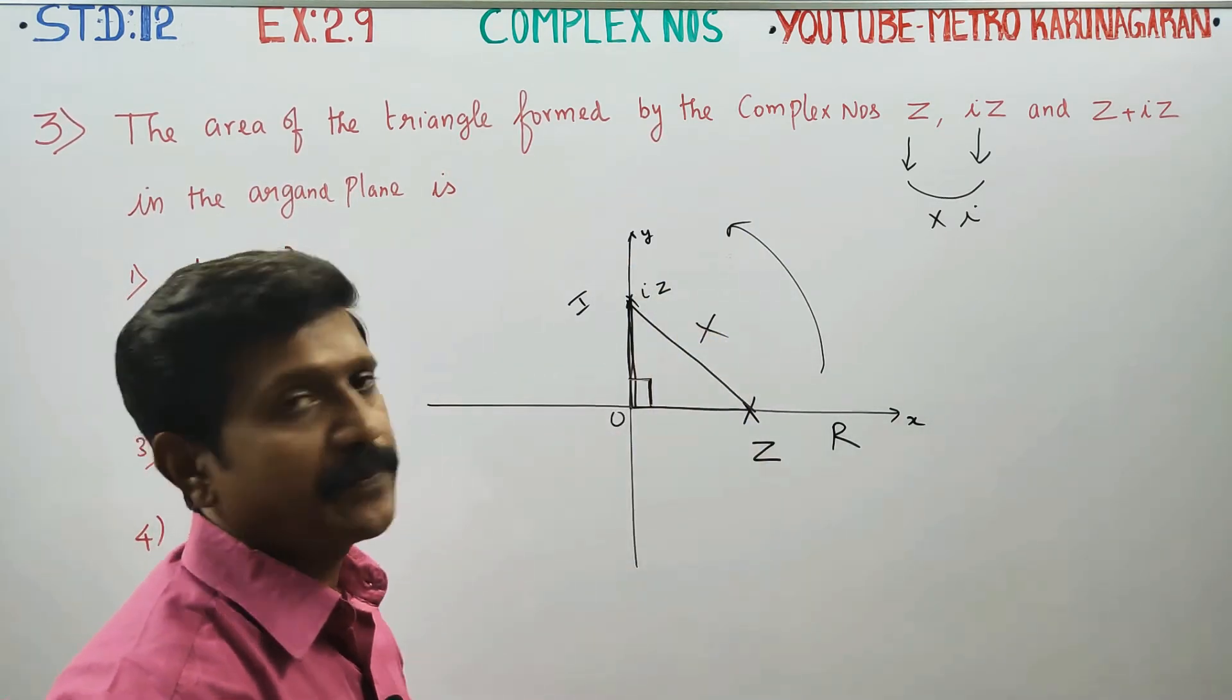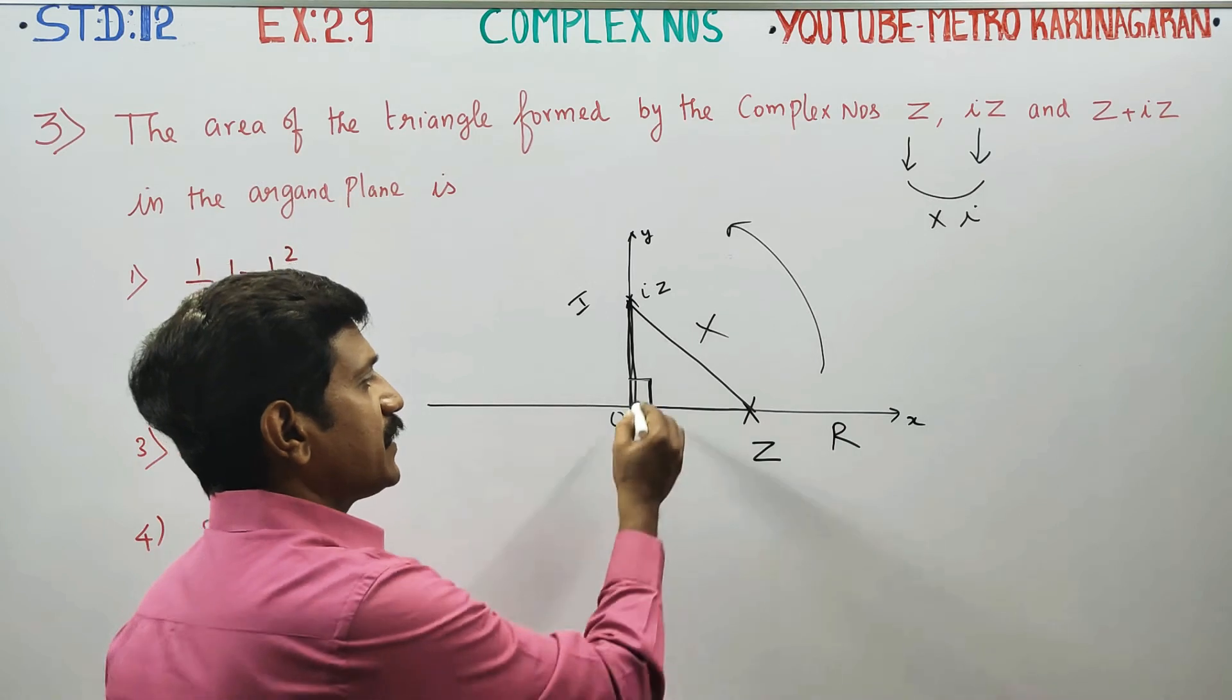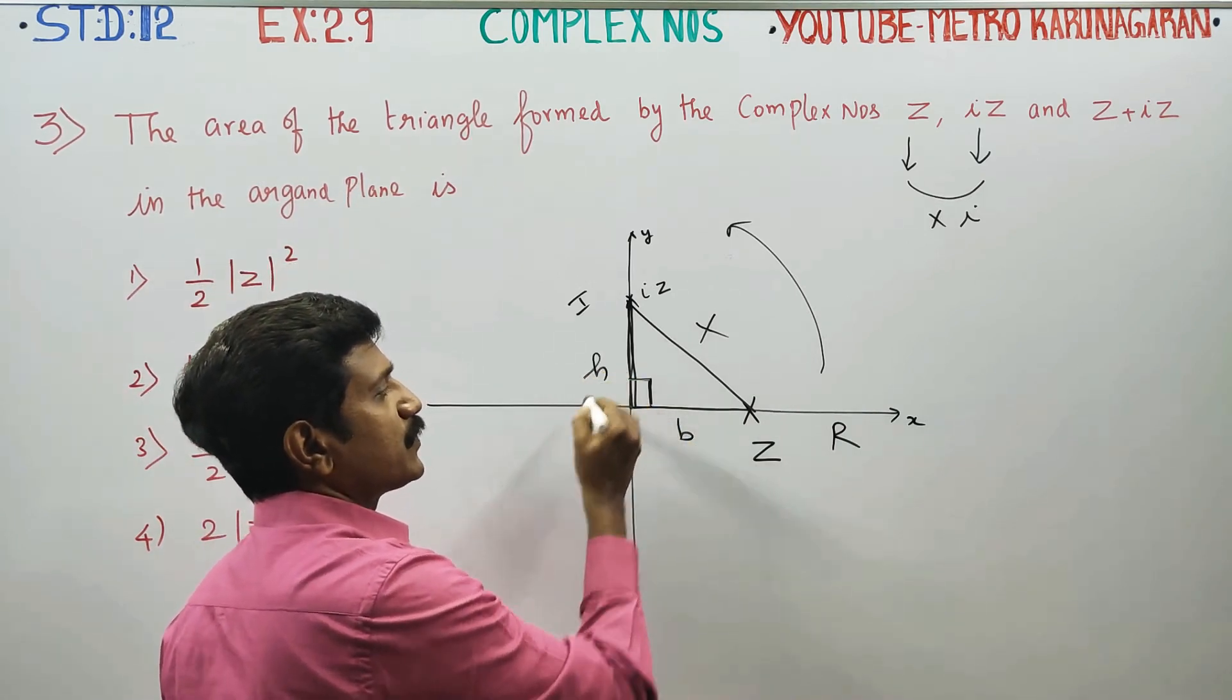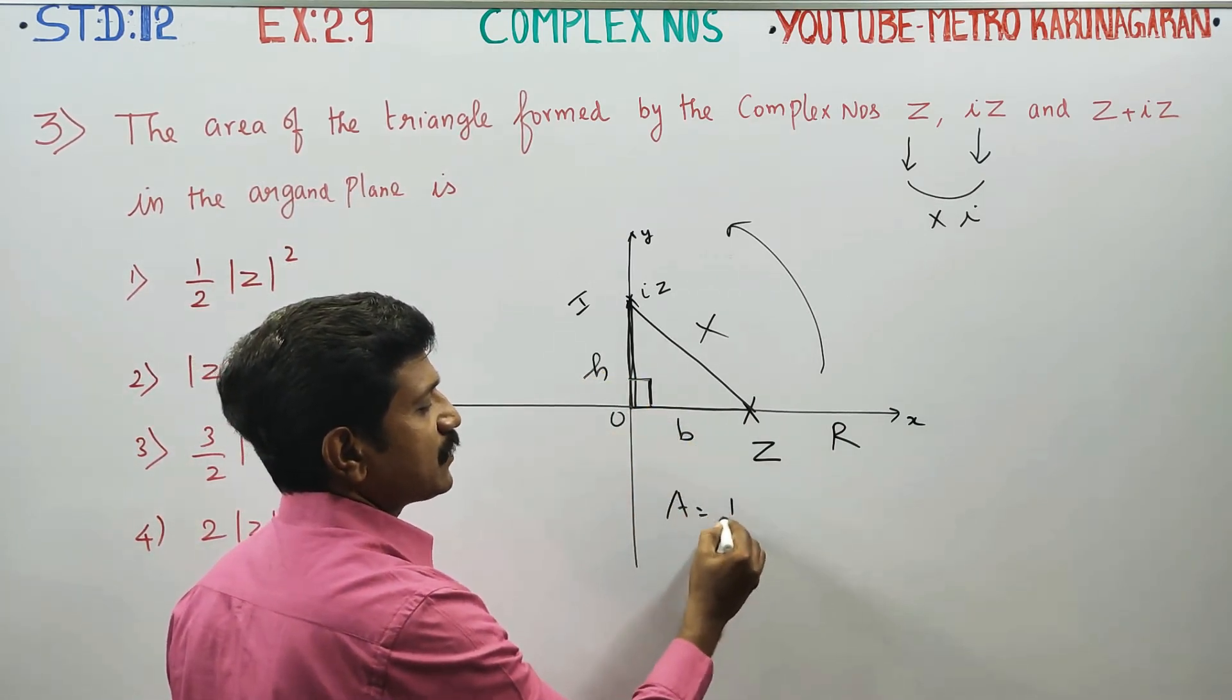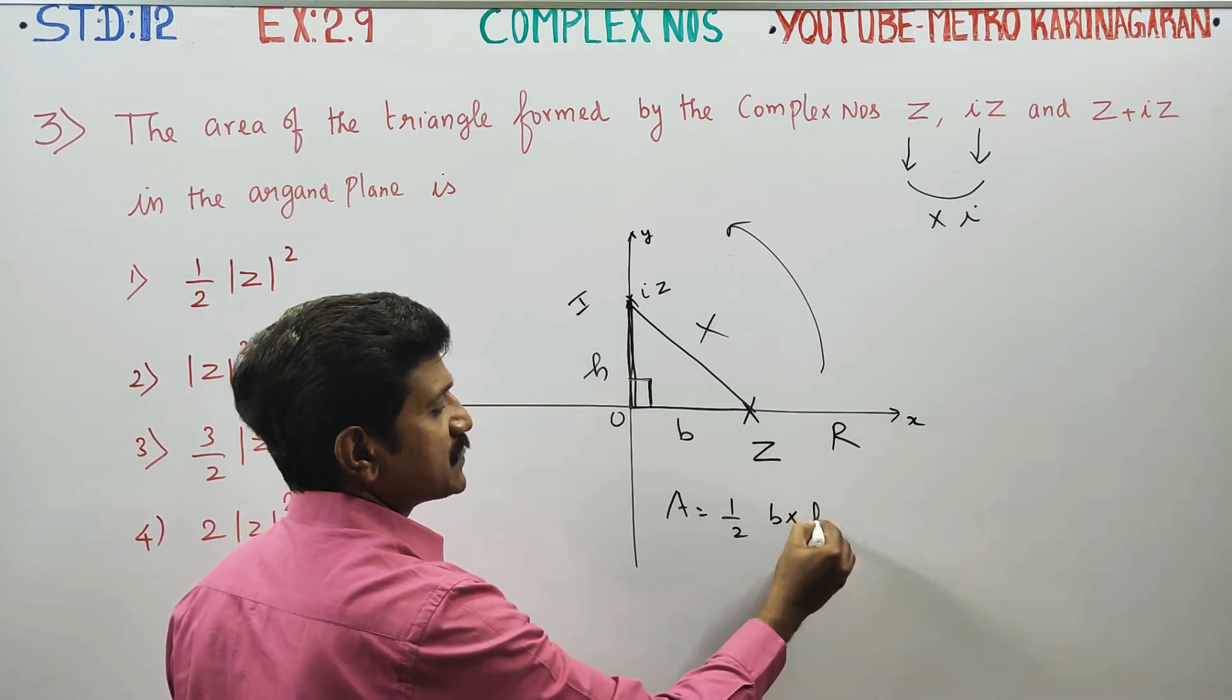90 degrees, base and height are at the same time. Area of the triangle is equal to half base into height. Half base into height.